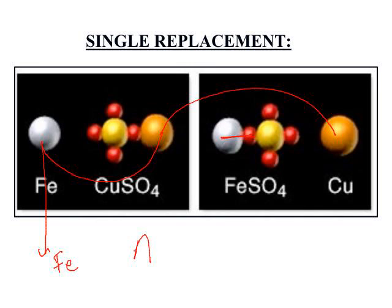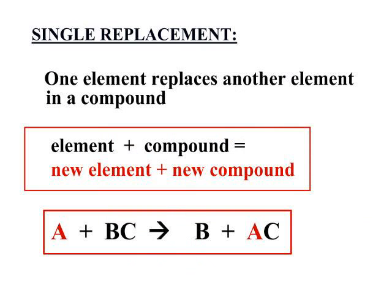So your formatting is typical: an element and a compound interacting. When you see that pattern, it's most likely that you will have a single replacement reaction. The single replacement reaction will take an element and a compound and form a new element and compound. This element will push out this element. Usually these are metals, not always. Sometimes they're hydrogen from acids. Then this element will bond with the remaining ion so that you get a new element and a new compound.